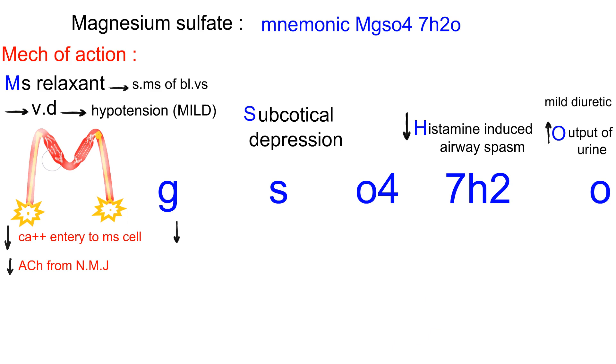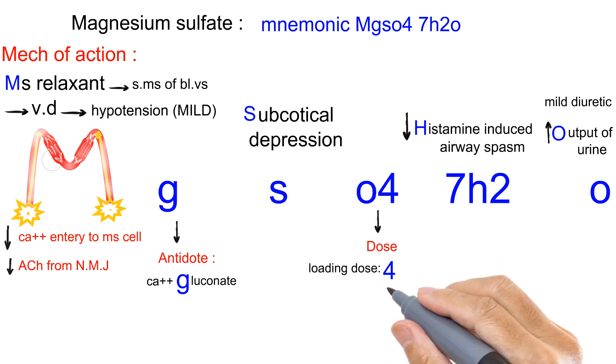The G letter will be the antidote, calcium gluconate. The O4 will be the dose: 4 grams is the loading dose, and the letter O is 1 gram per hour intravenous drip maintenance dose.